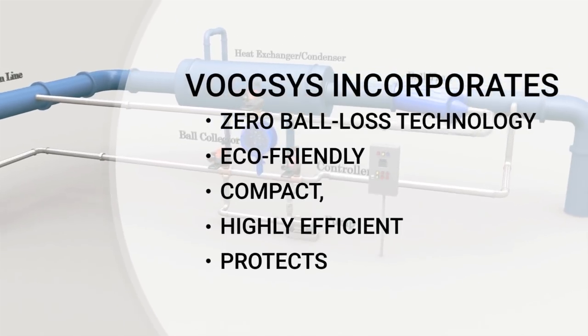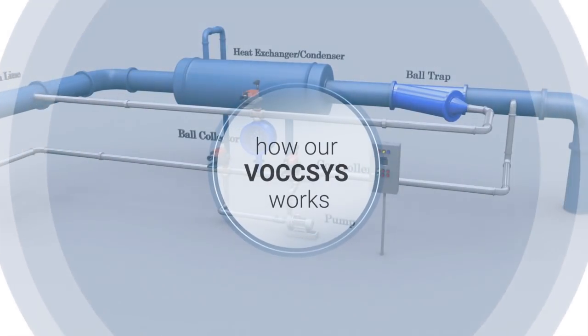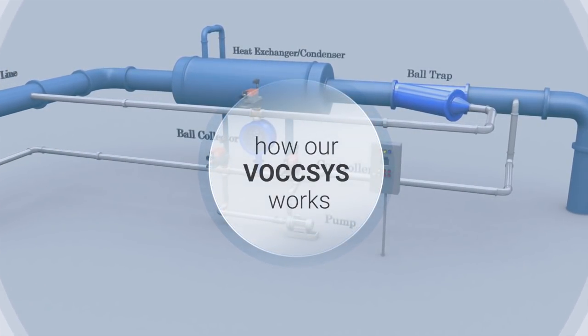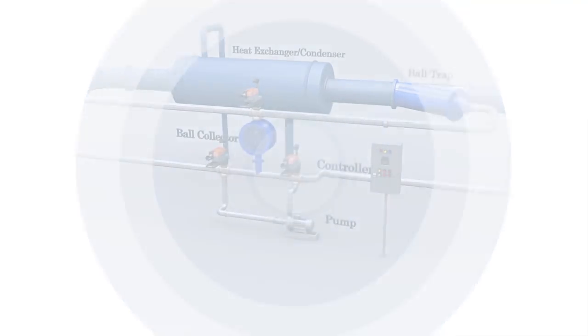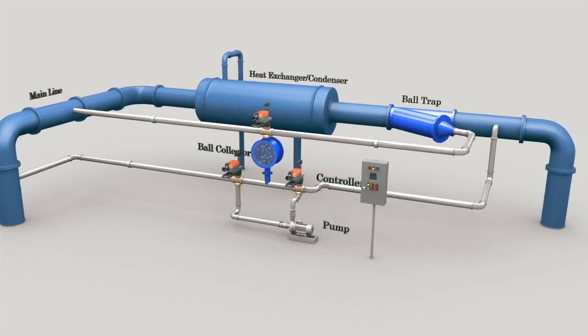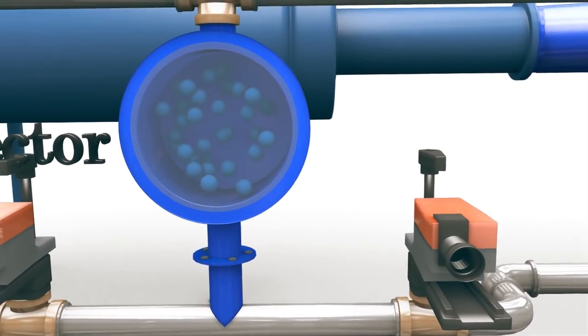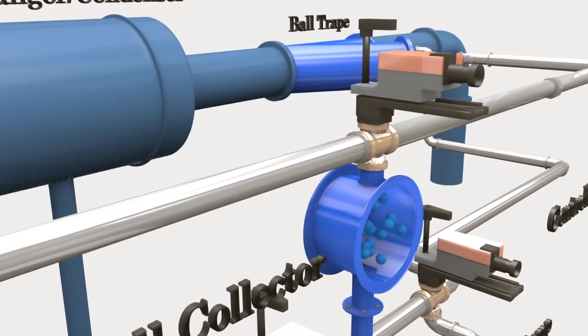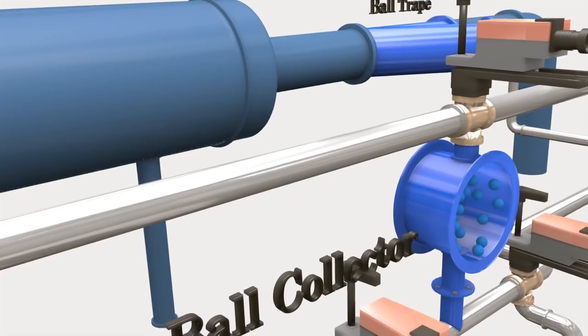Here is how our BOXCS works. When the cleaning cycle begins, the sponge balls in the collector are injected simultaneously into the system mainline.